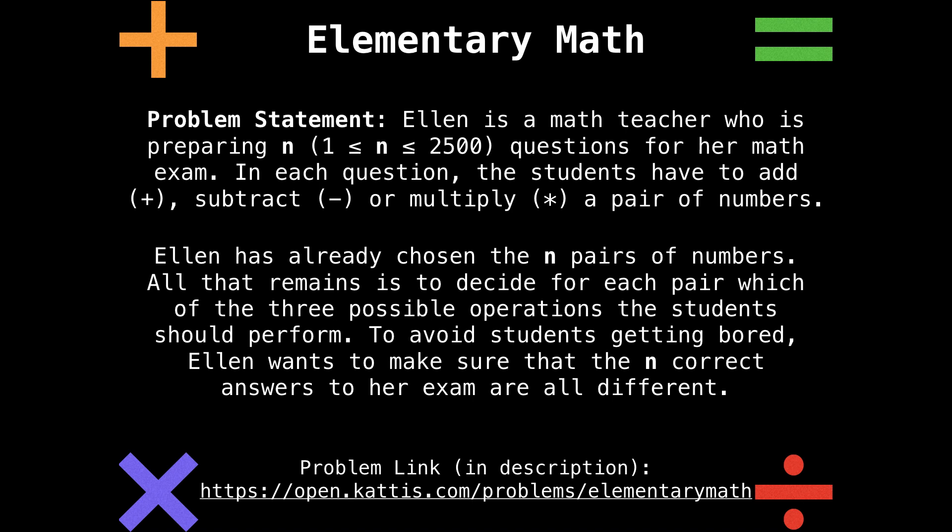Here's the problem statement. Ellen is a math teacher who is preparing n questions for her exam (n ≤ 2500 questions). In each question, the students have to add, subtract, or multiply a pair of numbers. Ellen has already chosen the n pairs of numbers. All that remains is to decide for each pair which of the three possible operations the students should perform. To avoid students getting bored, Ellen wants to make sure that the n correct answers on her exam are all different.